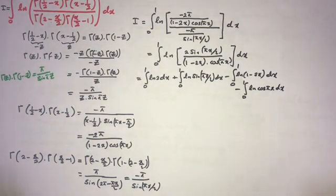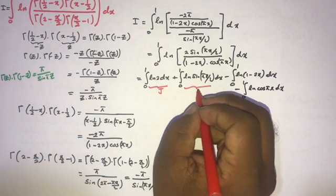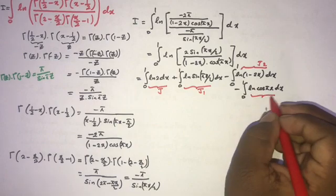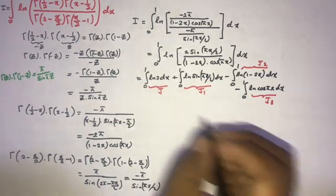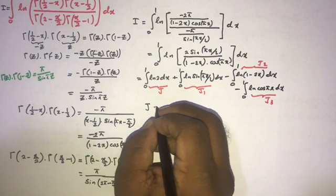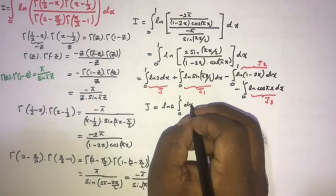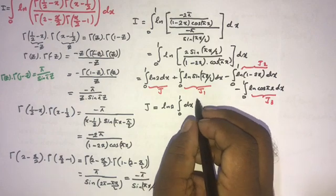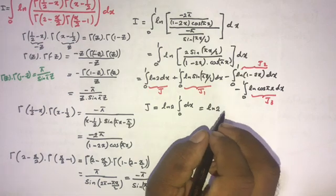We have four integrals to evaluate. Let J = integral from 0 to 1 of ln(2) dx, J1 = integral of ln(sin(pi*x/2)) dx, J2 = integral of ln(1 - 2x) dx, and J3 = integral of ln(cos(pi*x)) dx. First, J equals ln(2) times the integral from 0 to 1 dx, and since the integral of dx from 0 to 1 equals 1, we get J = ln(2).